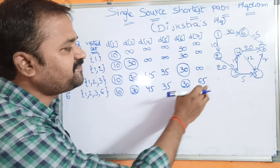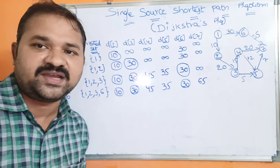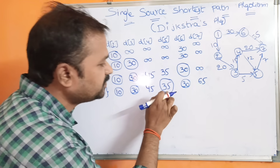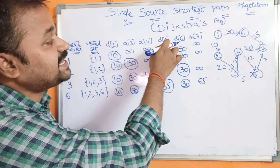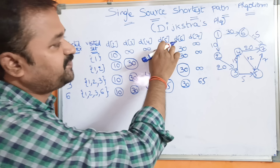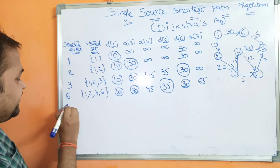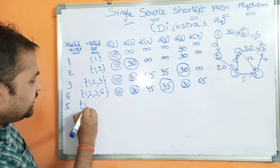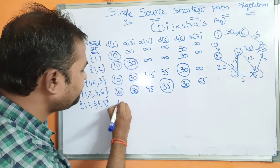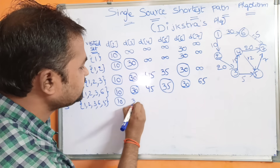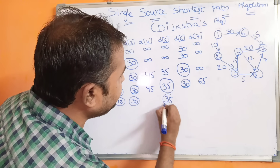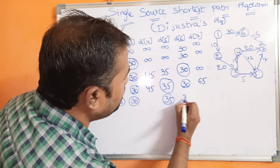Out of 45, 35, and 65, the minimum value is 35. So we assume the vertex with cost 35 as the next vertex. The cost 35 is the cost of the fifth vertex, so the next vertex is 5. The visited set is now {1, 2, 3, 6, 5}. Costs of 2, 3, 5, and 6 are already calculated.